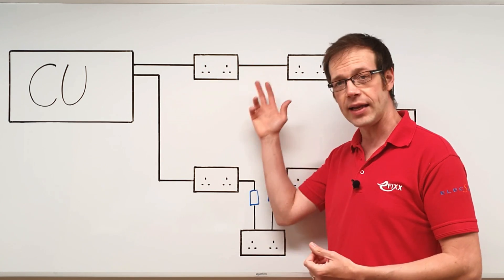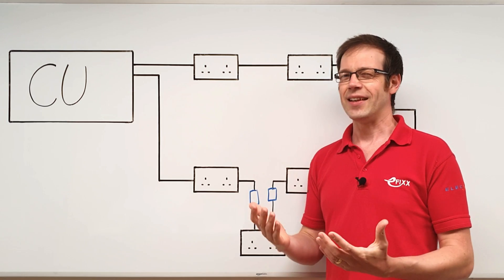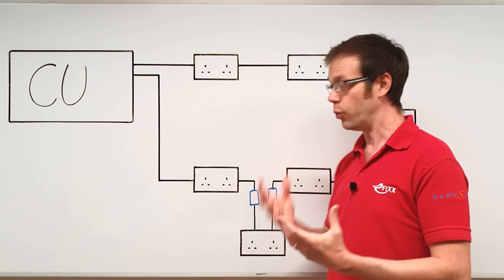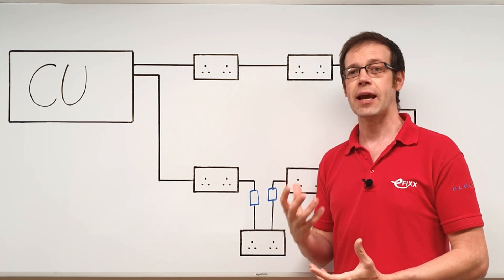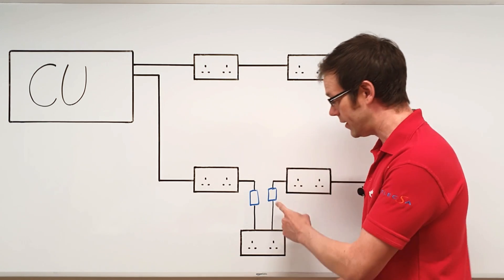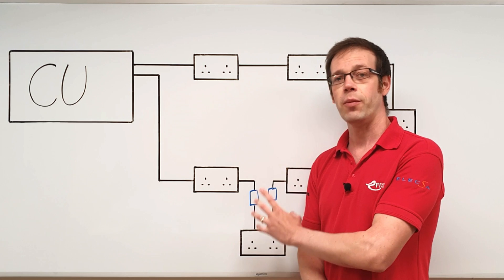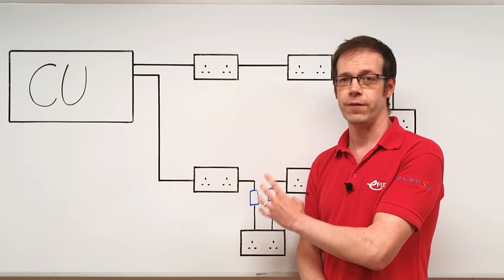So does it not make sense then that any connections made within the ring must also be able to carry at least 20 amps? Hence the reason why this 16 amp rated Insure connection box would not be suitable on a ring final circuit, even if you use two, one for each connection. It's simply not what they're designed for.